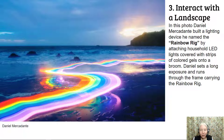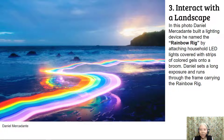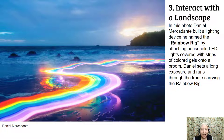Number three: interact with a landscape. In this photo, Daniel Mercandate built a lighting device he named the rainbow rig by attaching household LED lights covered with strips of colored gels onto a broom handle. Daniel sets a long exposure and runs through the frame carrying the rainbow rig. He has all sorts of photographs in the series running through forests and different settings.